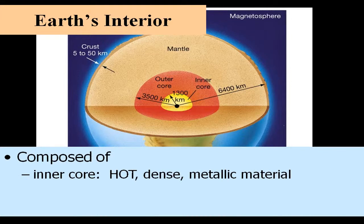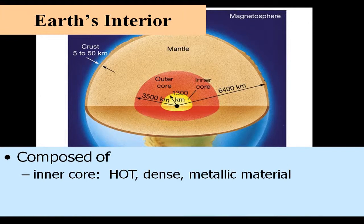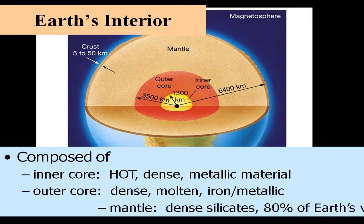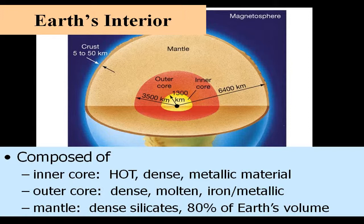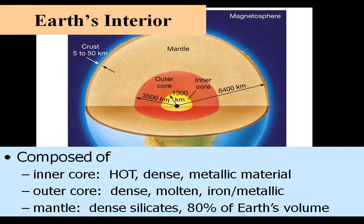Going into the interior of the Earth to the core, we have an inner core which is hot, dense, metallic material under so much pressure that it is essentially solid. The outer core is also dense, iron metallic material, but it's molten — so we have a solid inner core and a molten outer core. Above that, comprising most of the volume of the Earth — about 80% — we have the mantle, which consists of dense silicates, basically rock, silicon dioxide. So the element most present in the Earth is oxygen, but in the form of rock, as dense silicates.